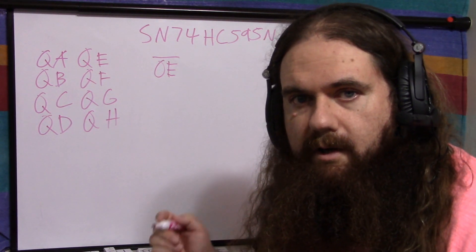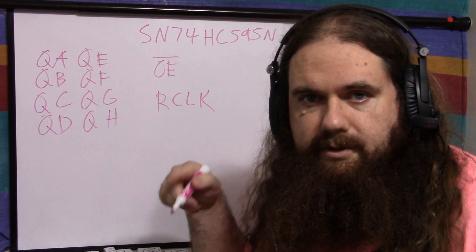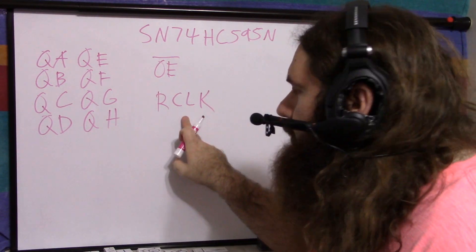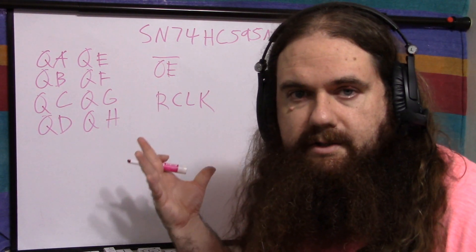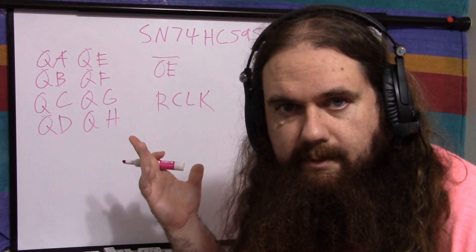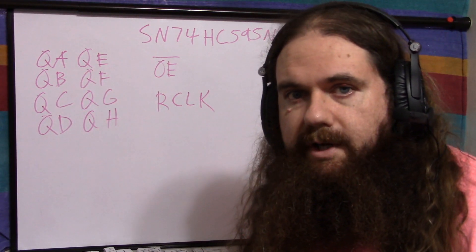These outputs are updated by the R clock pin, active high, so rising edge. Every time you pulse R clock, these outputs will be set to the contents of the shift register, whatever they happen to be. If you don't pulse R clock, these outputs will never change.